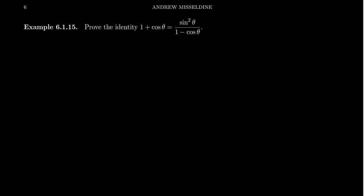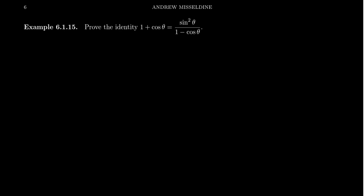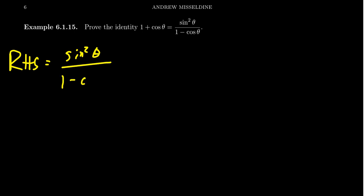Let's look at another example. Let's prove the identity one plus cosine theta is equal to sine squared over one minus cosine theta. What are we going to do there? I would say that the right-hand side is the more complicated one, so let's start with the right-hand side. You never work with both sides at the same time — it's unkosher to do such a thing.